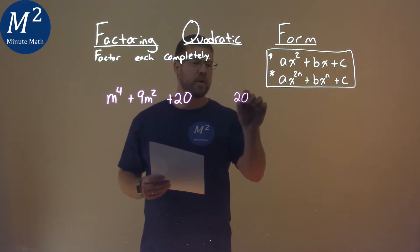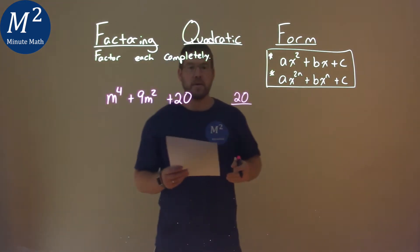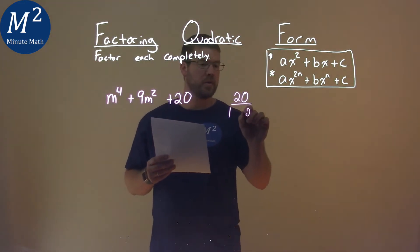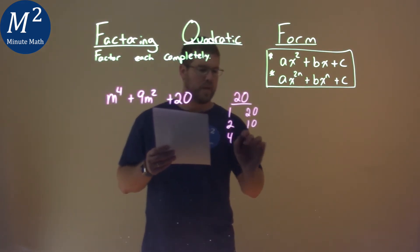Take our c value, which is 20. What two numbers multiply to be 20? Well, it's 1 and 20, 2 and 10, and a 4 and a 5.